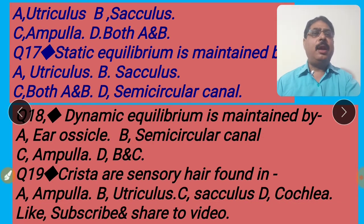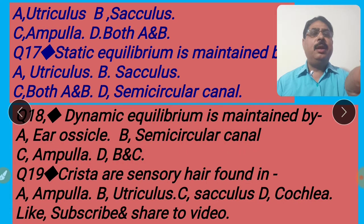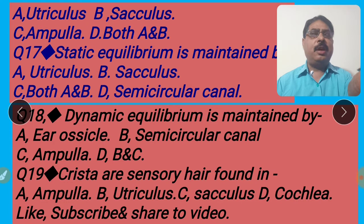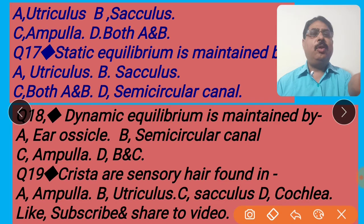Next question, 18: Dynamic equilibrium is maintained by — three semicircular canals take part in dynamic equilibrium, with ampulla. Ampulla is the terminal part of the semicircular canal and contains a second type of sensory hair called crista — complete name: crista ampullaris. Crista ampullaris is named based on its location in the ampulla. So the right answer is option D — B and C. I shall click option D for the right answer.